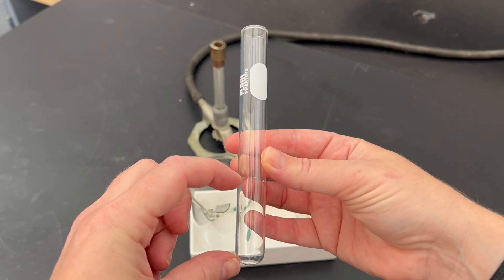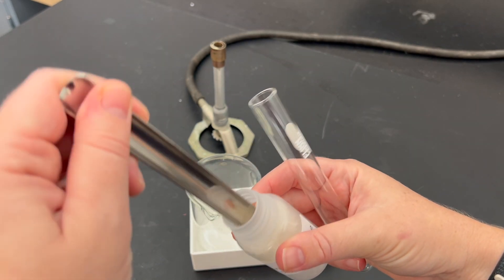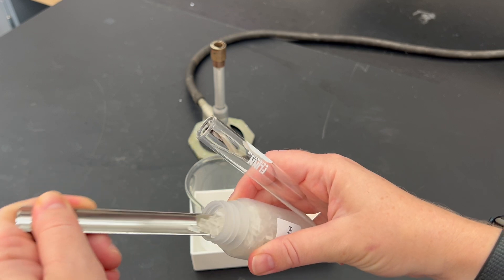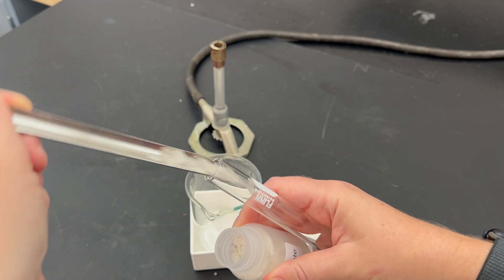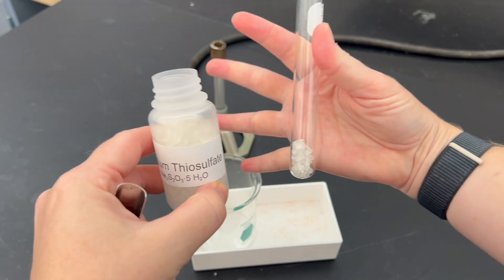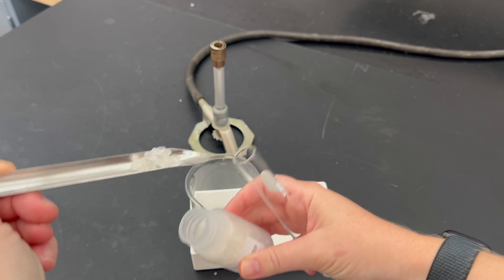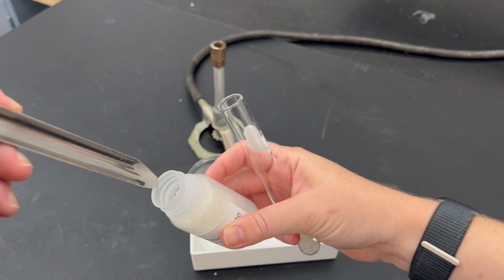You'll first need to start by filling this one quarter of the way full. Open up the sodium thiosulfate and scoop it in. If you spill it on the table, make sure you pick it up. That's not quite enough, a little bit more, a little bit more.